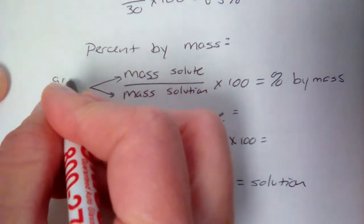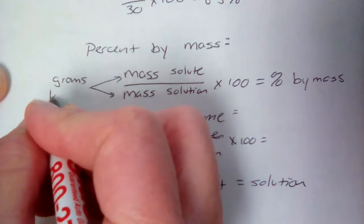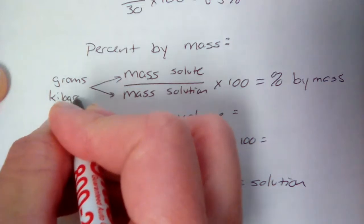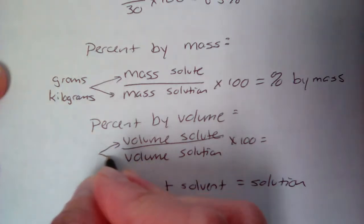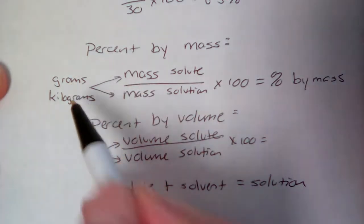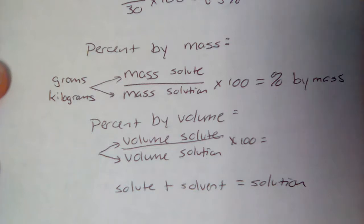Masses can be measured in grams or kilograms. Either will work just fine, they just have to both be the same. So if one of them's in grams and one's in kilograms, you have to choose one to convert, and it does not matter which one you convert.